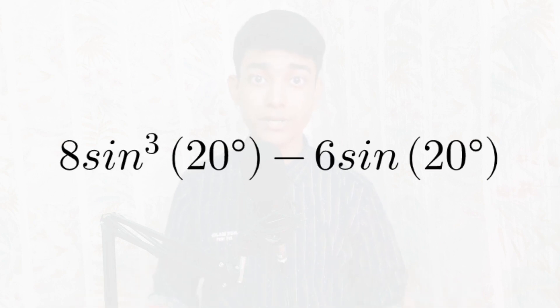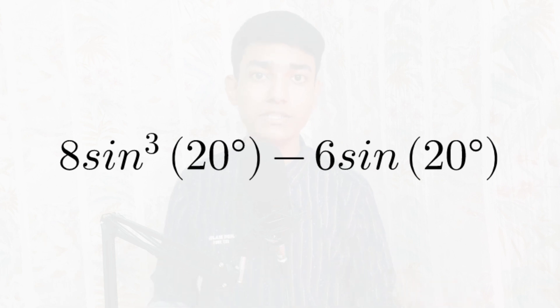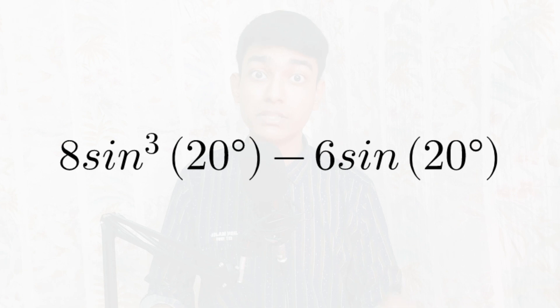Today we have an interesting trigonometric equation to simplify: 8 sin³(20°) minus 6 times sin(20°). When we look at this equation it seems simple, but what makes it difficult is sin(20°). Most people would think to calculate sin(20°) separately and substitute it, but that's the wrong method because computing sin(20°) is not easy — it would be a lengthy process.